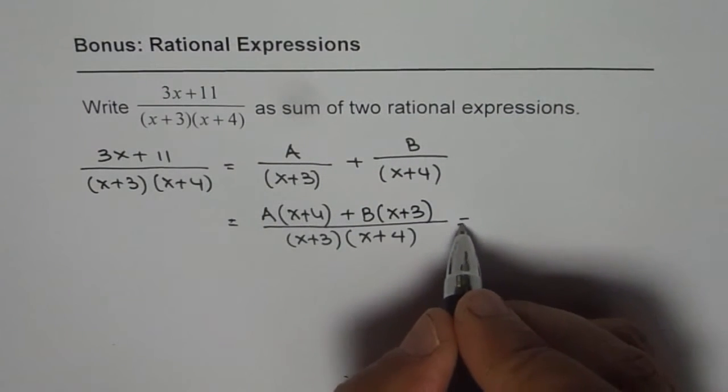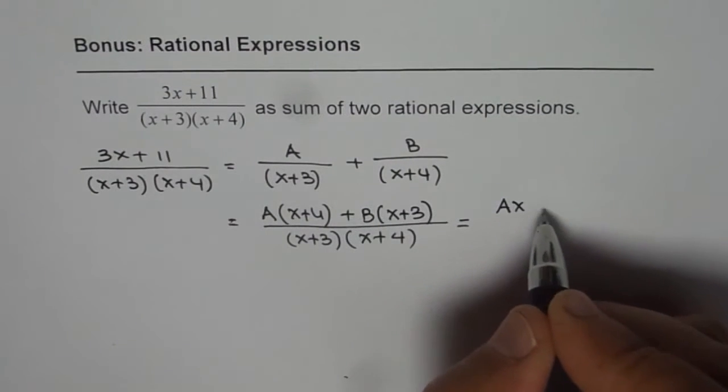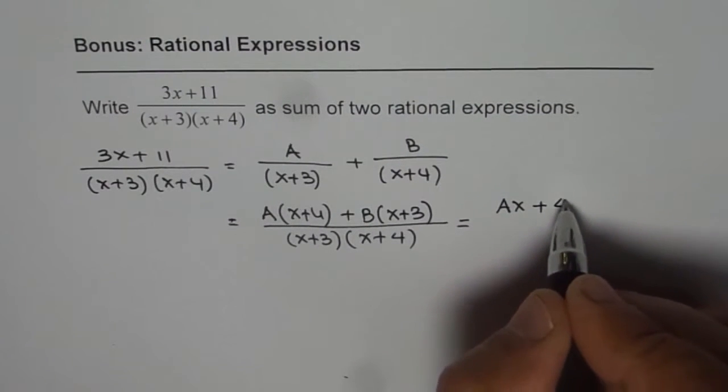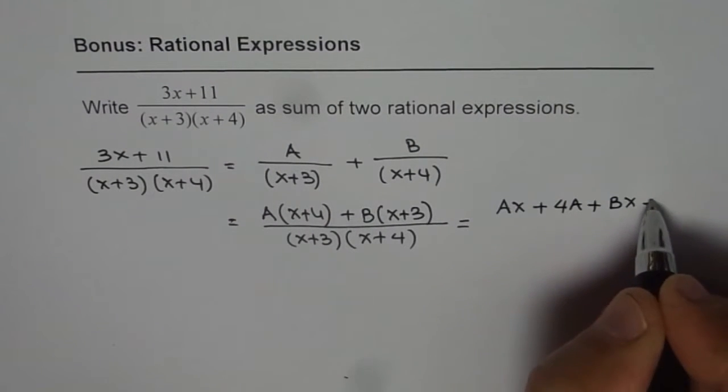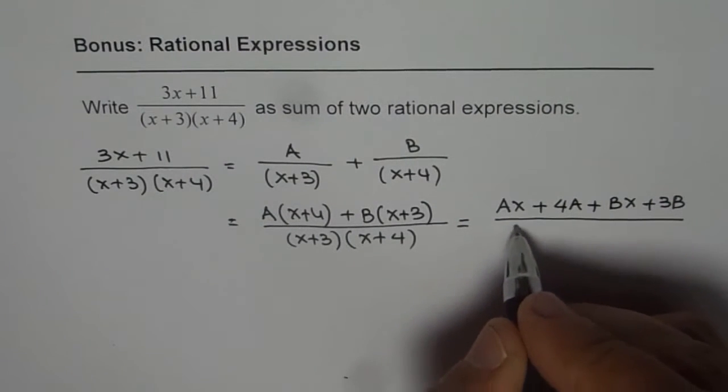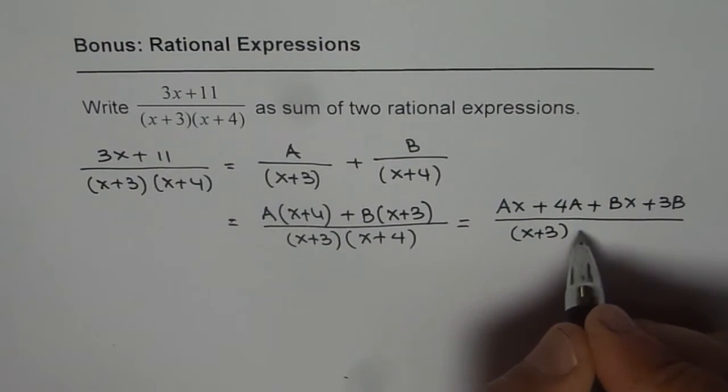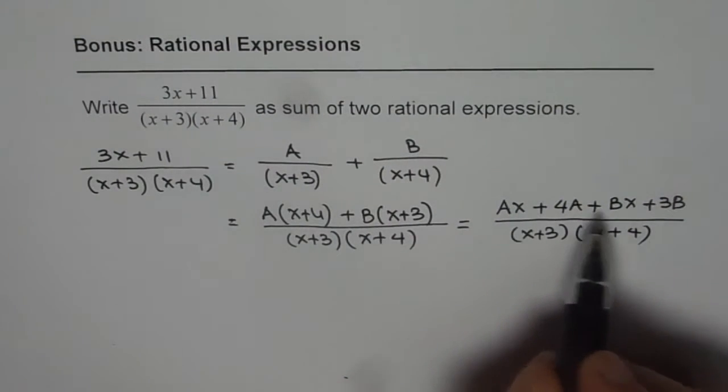Now that gives us Ax plus 4A plus Bx plus 3B over (x plus 3)(x plus 4). Now we can take x common.